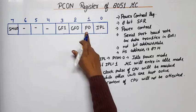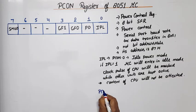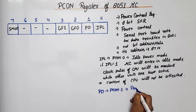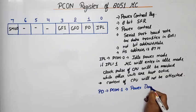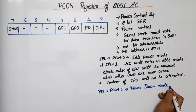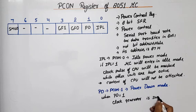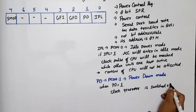Next bit is PD or we can say PCON dot 1. This is called power down mode. In this case, when PD is equal to 1, what will happen? Power down mode will activate and clock generator is switched off.